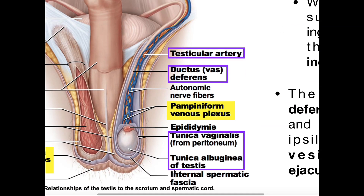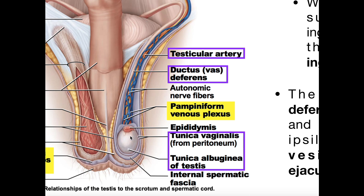If we zoom in and look at one of the testes, the testes are surrounded by two membranes. The membrane directly on the surface of the testes is what we call the tunica albuginea — this is sort of like a visceral serous membrane lying directly on the surface. Then there's an outer layer, almost like a parietal layer. In fact, it's derived from the parietal peritoneum, and this is called the tunica vaginalis. Both testes are surrounded by both of these layers.